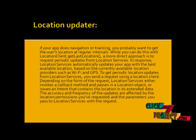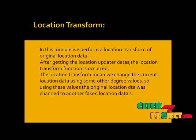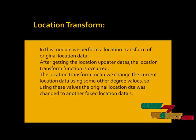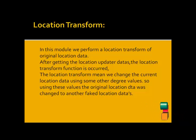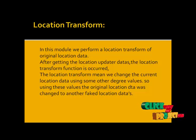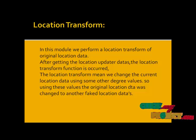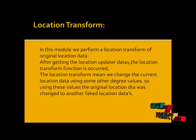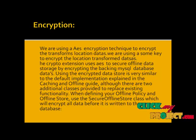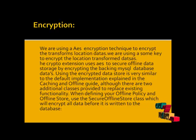To get periodic location updates from the location service, you send the request using a location client. Depending on the form of the request, the location service either invokes a callback method and passes in a location object, or issues an intent containing a location in its extended data. The accuracy and frequency of updates are affected by the location permission requested and parameters passed within the request. For the Location Transform module, we perform transformation of the original location data updated from the user's mobile. After getting the updated location data, the location transform function is applied — the current location data is changed using some offset degree values to produce a different faked location.